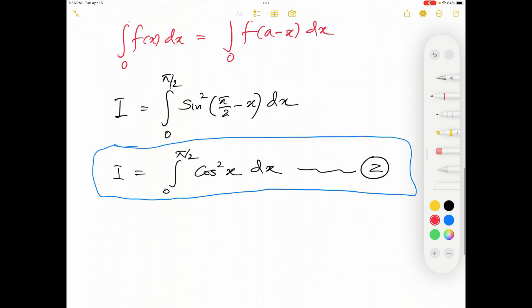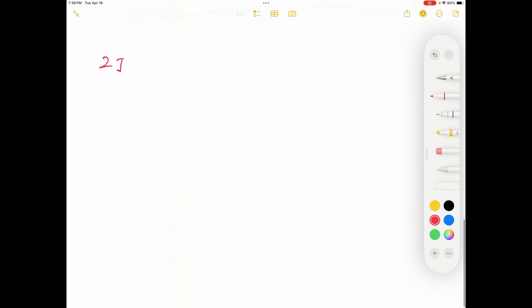So let me write it down. 2i is equal to integral 0 to pi over 2. The first one was sine squared x and the second one was cosine squared x and we have dx. What is sine squared x plus cosine squared x? That's the Pythagorean identity from trig and that's equal to 1.